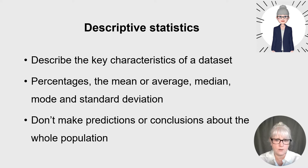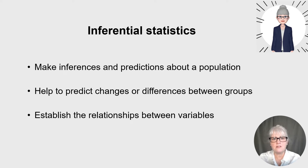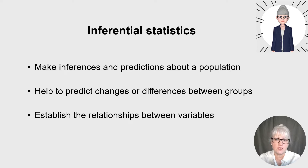When you use descriptive statistics, you do not make predictions or conclusions about a whole population — you're focused on the data set. In contrast, with inferential statistics you can make inferences and predictions about a population. Inferential statistics help to predict changes or differences between different groups and establish relationships between variables.